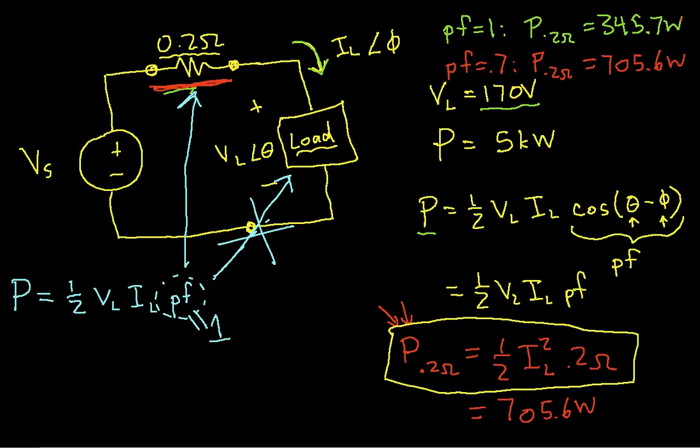Because in a resistor, the voltage across it and the current through it are always in phase. That's one of the nice things about resistors. And so if the voltage and current are in phase, the phase difference between them is 0. The power factor is the cosine of that phase difference, which is 1.